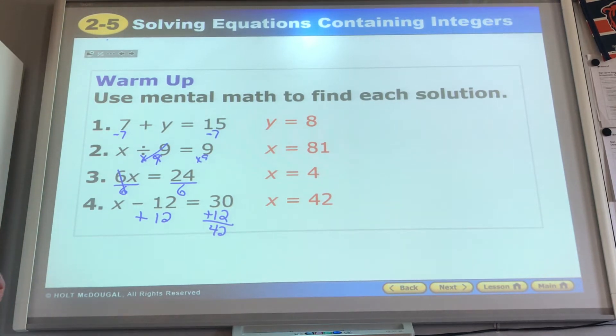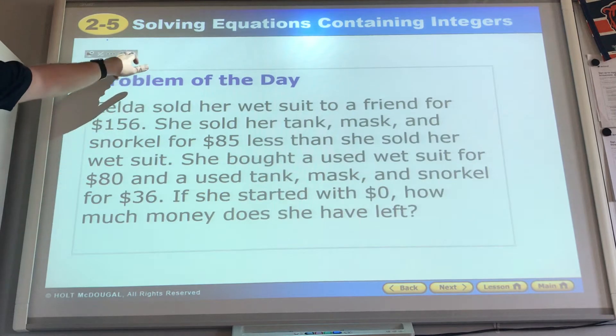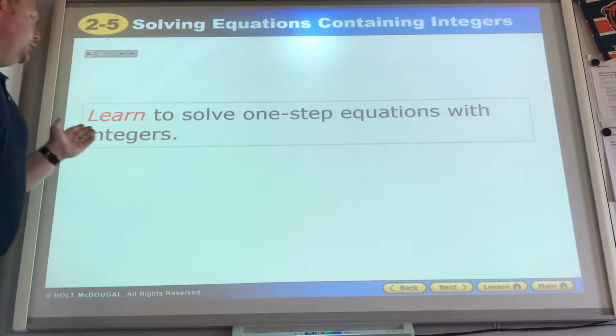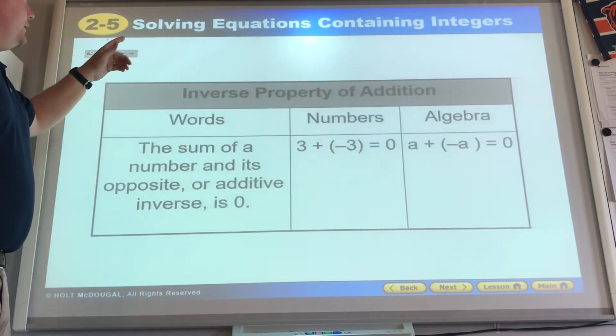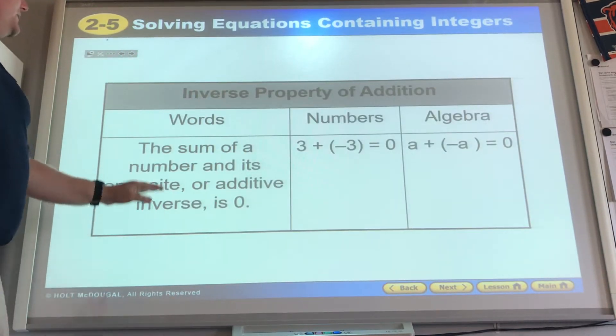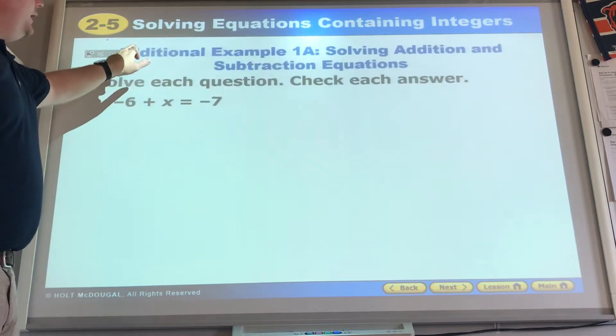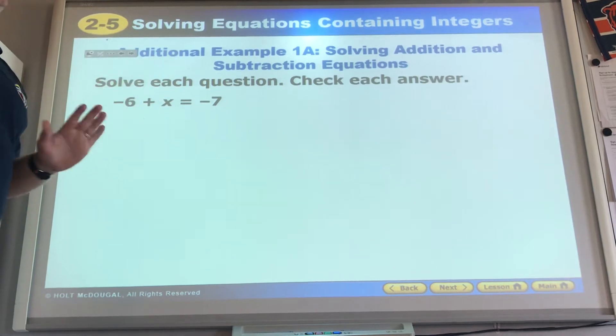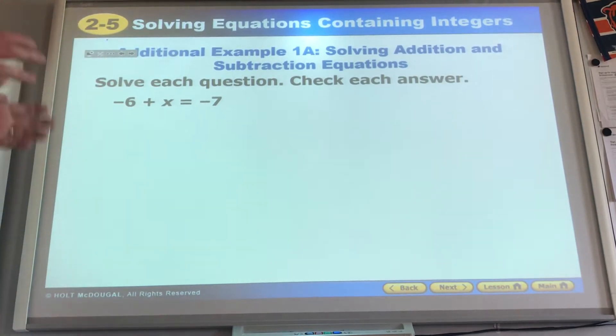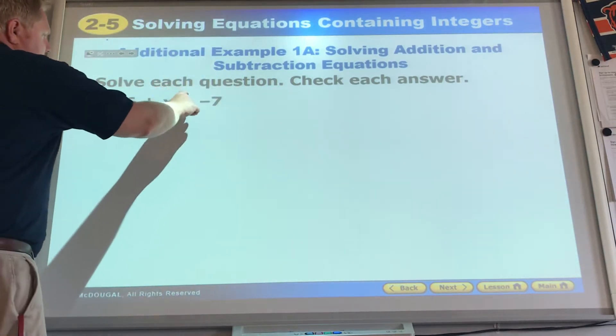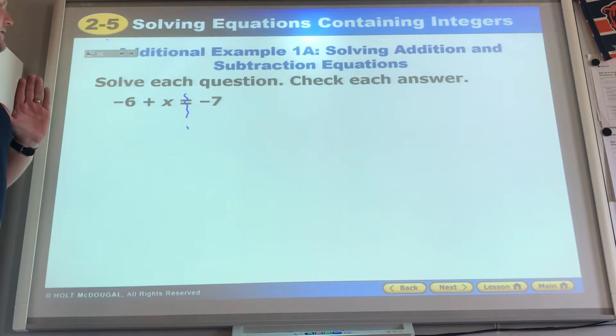Now, we're going to focus on doing these same things, but with integers. Learn to solve one-step equations with integers. The sum of a number and its opposite or additive inverse is 0. The only difference is we're using integers. I've got my two sides to the equation. We want to work on the left side, because that's where the variable is.